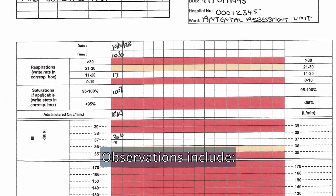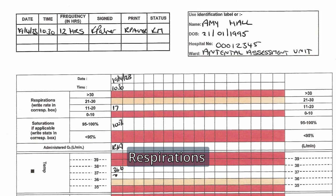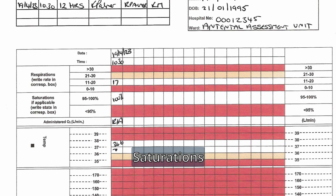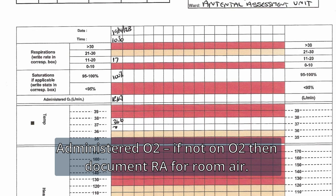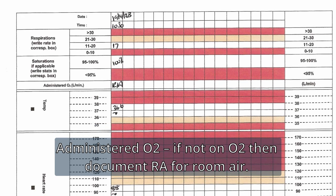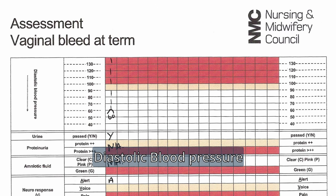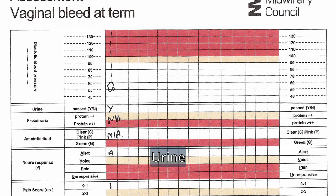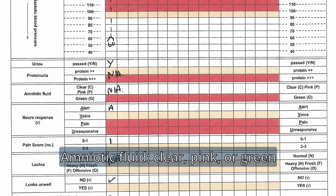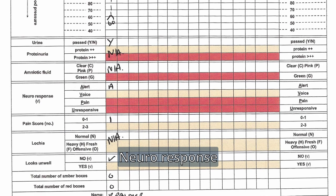Observations include: respirations, saturations, administered O2 — if not on O2 then document RA for room air — temperature, heart rate, systolic blood pressure, diastolic blood pressure, urine, proteinuria, and amniotic fluid: clear, pink, or green.